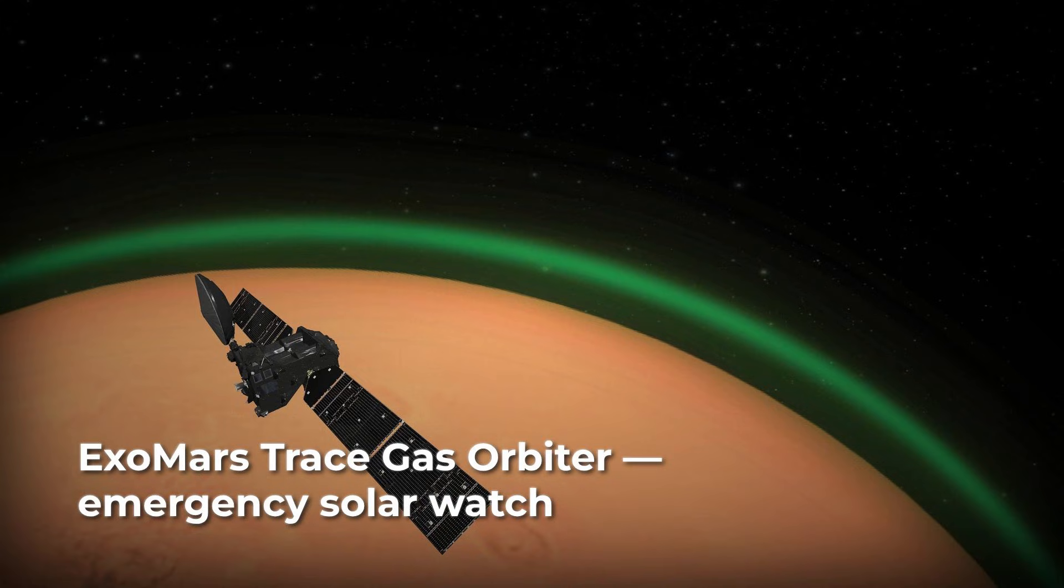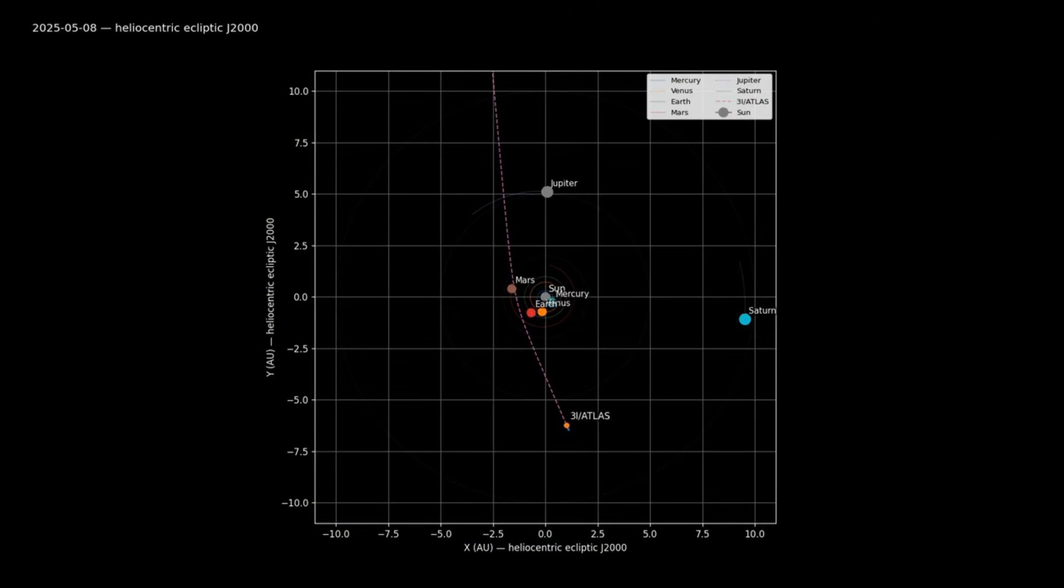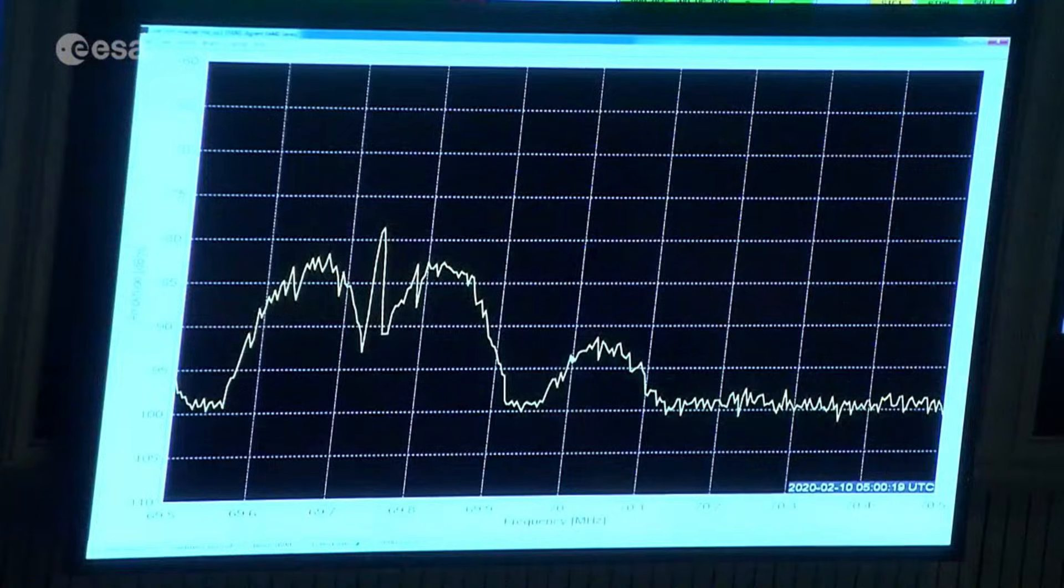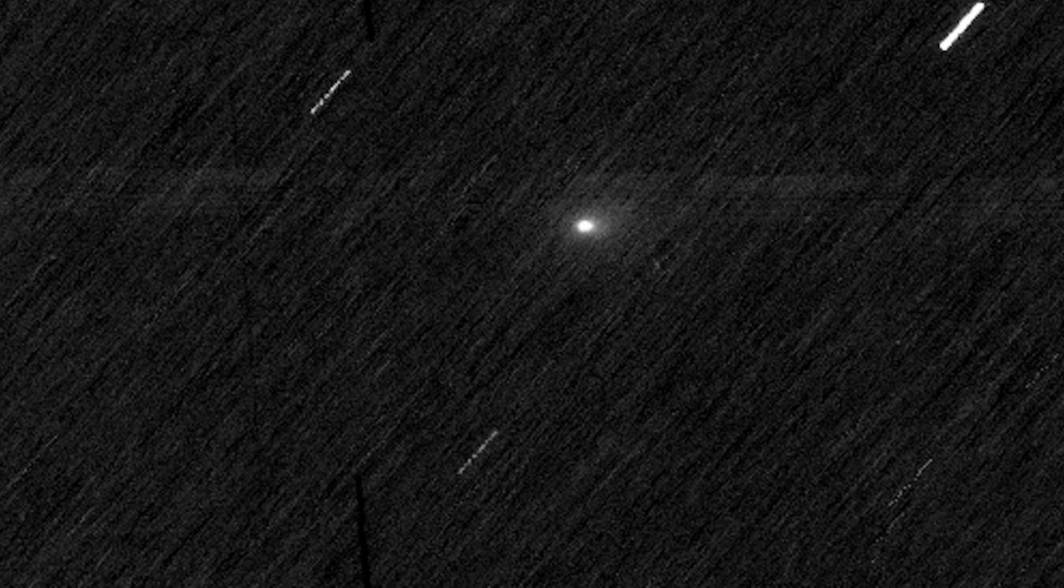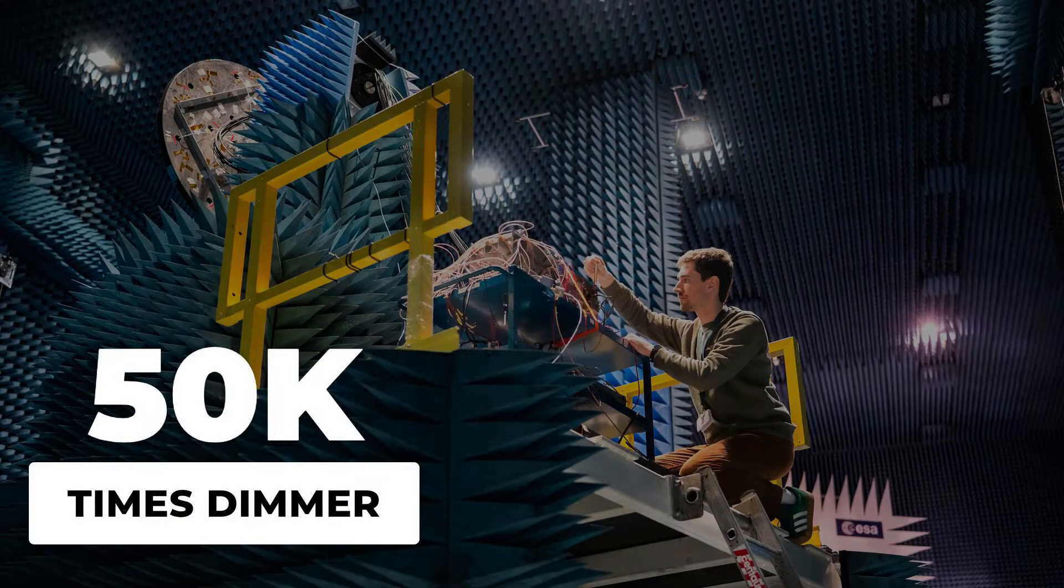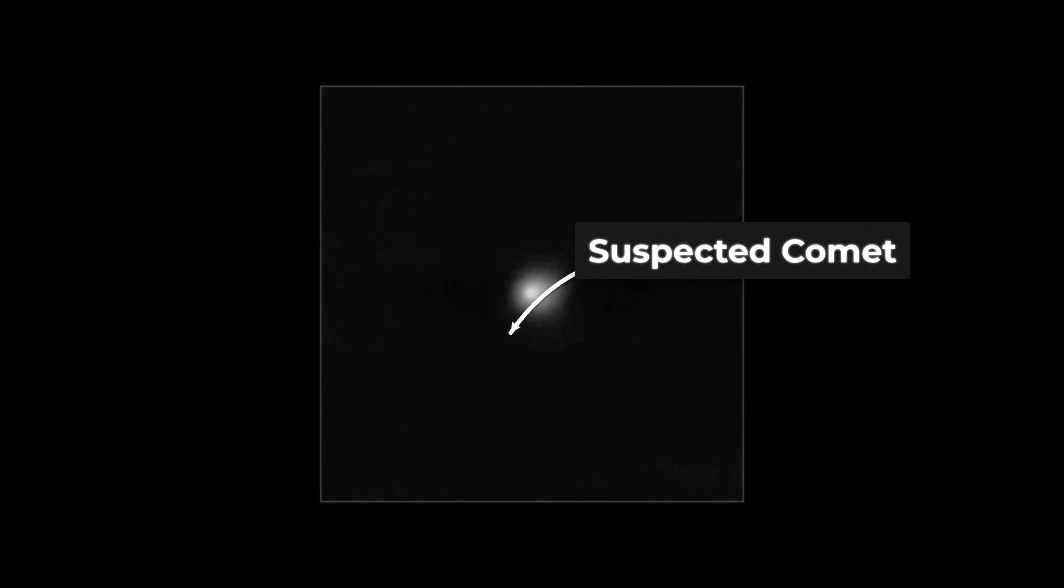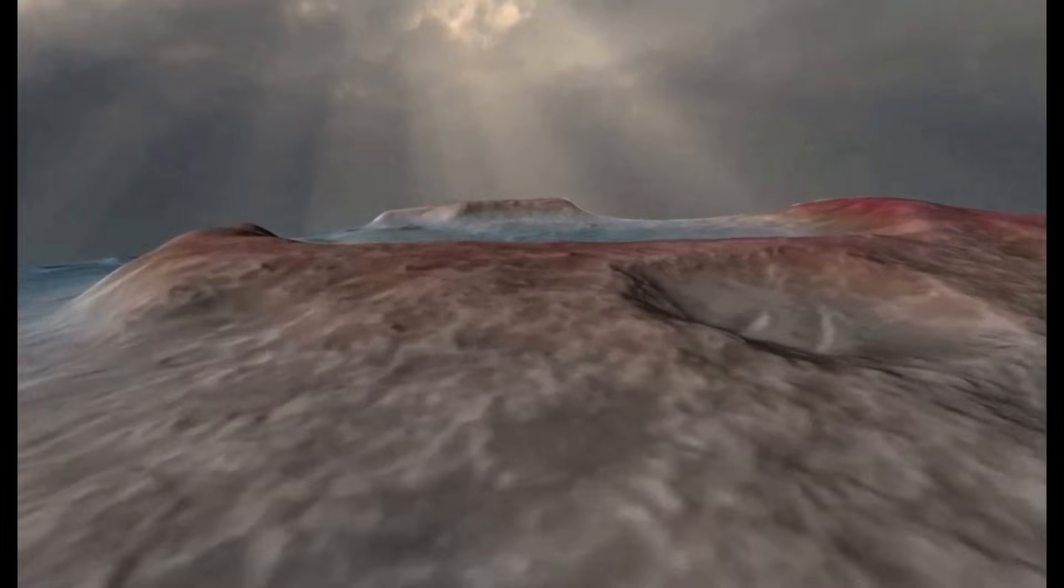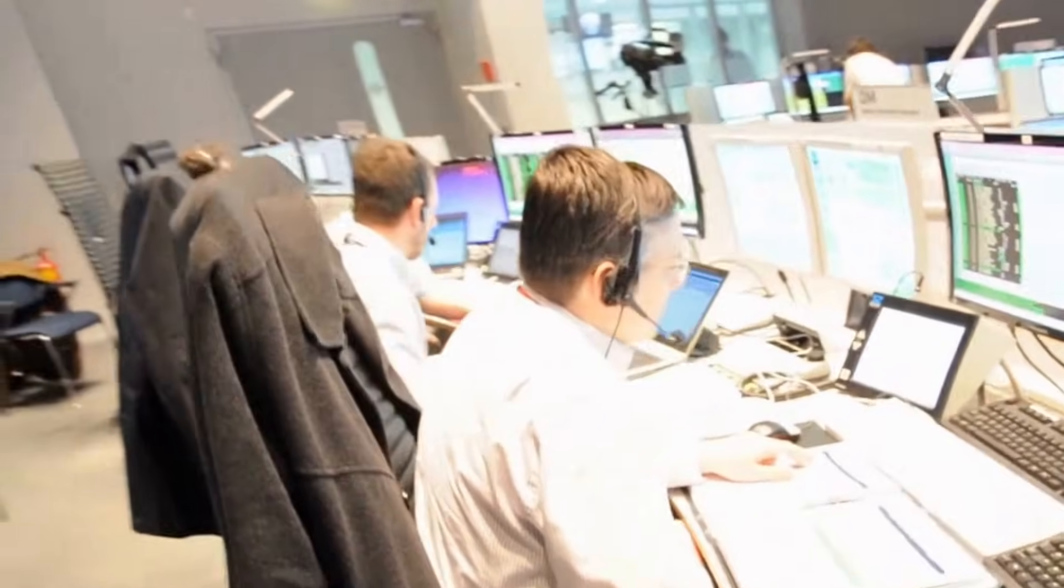ExoMars Trace Gas Orbiter, built to scan the Martian surface, was pressed into service as 3i-Atlas swept past Mars in early October. The instrument team turned its high-resolution camera off the planet and out into the black, capturing a series of five-second exposures, each one stretched to the technical limit. The target was nearly 50,000 times dimmer than anything the orbiter was designed to image. Raw frames showed little more than a scatter of digital static. In most, the suspected comet was indistinguishable from the background noise. Processing pipelines, tuned for crisp Martian terrain, struggled to extract any reliable signal. Analysts at the European Space Agency flagged the preliminary images as likely noise, not confident enough to claim even a faint detection.